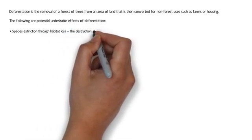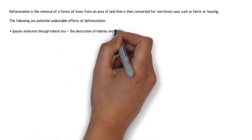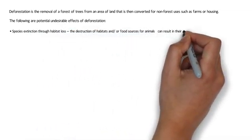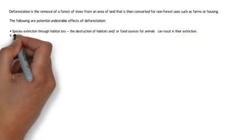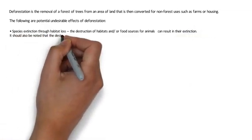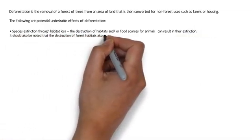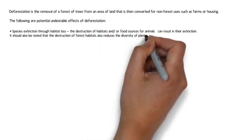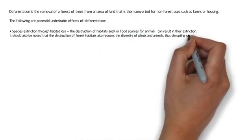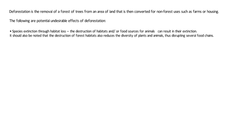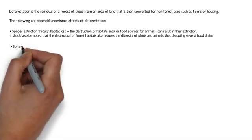Species extinction through habitat loss. The destruction of habitats and/or food sources for animals can result in their extinction. It should also be noted that the destruction of forest habitats also reduces the diversity of plants and animals, thus disrupting several food chains.